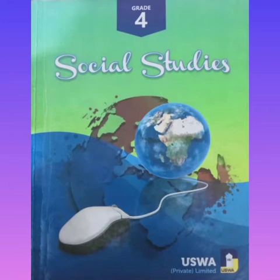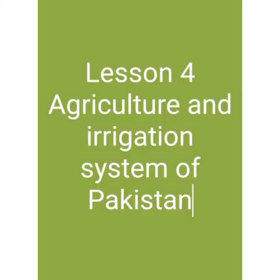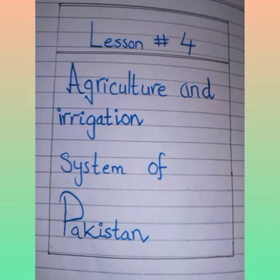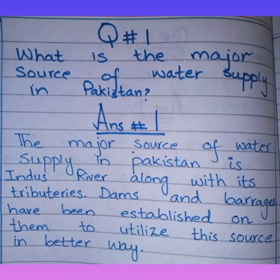Dear students, we are going to study Social Studies of Class 4. Today we are going to solve subjective questions. For this purpose, you have to open your notebooks. First of all, draw margin lines and make the title page of your today's lesson: Lesson No. 4, Agriculture and Irrigation System of Pakistan. Then on the next page, draw margin lines and write the date and day on top of the page.